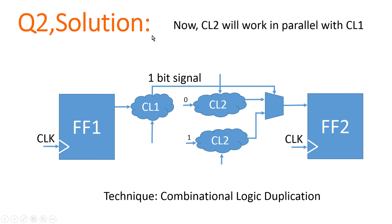Now let us come to the solution of question number two. To resolve this type of problem I am using a technique called combinational logic duplication. What I mean is I am repeating combination logic 2. Since only one bit passes from combination logic 1 to combination logic 2, that one bit can take only two values — either 0 or 1. So I feed input 0 to one copy of combination logic 2 and input 1 to another copy.